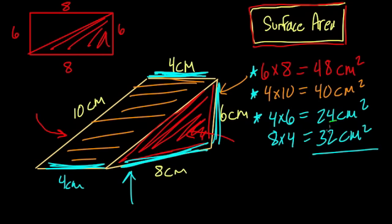Let's add them up. 4 and 2 is 6, plus 8 is 14. 4 and 4 is 8, 9, 10, 11, and then 3 more is 14. So 144 square centimeters. And that's our surface area. Thanks.